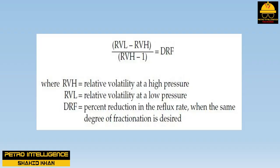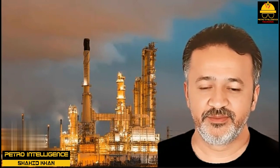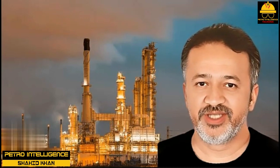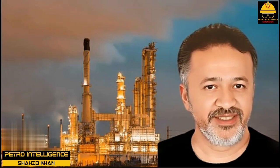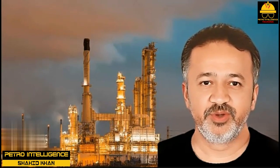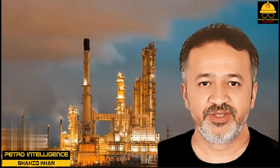We can quantify this last statement as follows: (RVL minus RVH) divided by RVH equals DRF, where RVH equals relative volatility at a high pressure, RVL equals relative volatility at a low pressure, and DRF equals percent reduction in the reflux rate when the same degree of fractionation is desired. Reducing reflux saves reboiler duty. In addition, the lower pressure will reduce the tower bottom temperature, and this also cuts the reboiler energy requirement. For most distillation towers, the energy cost of the reboiler duty is the main component of the total operating cost to run the tower.